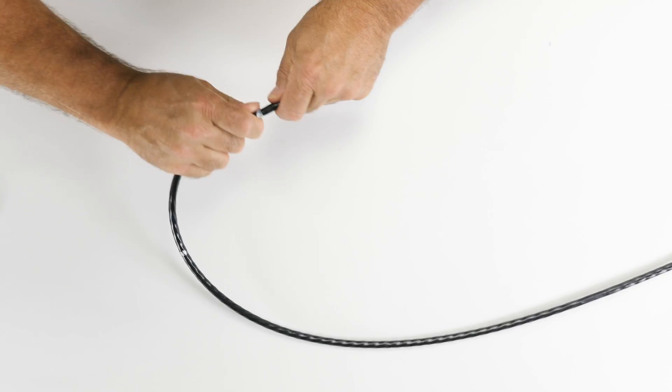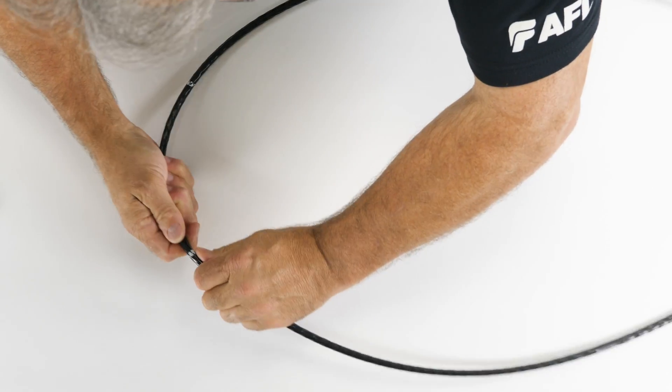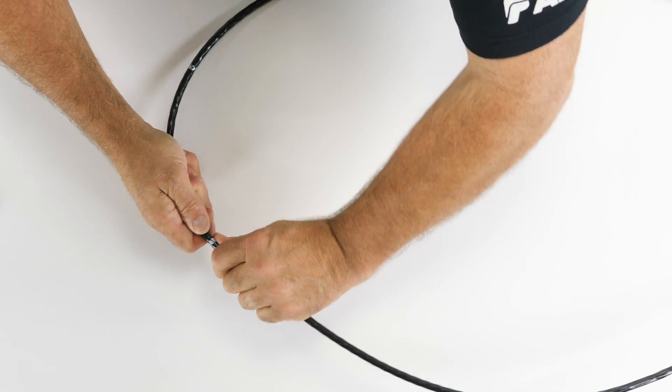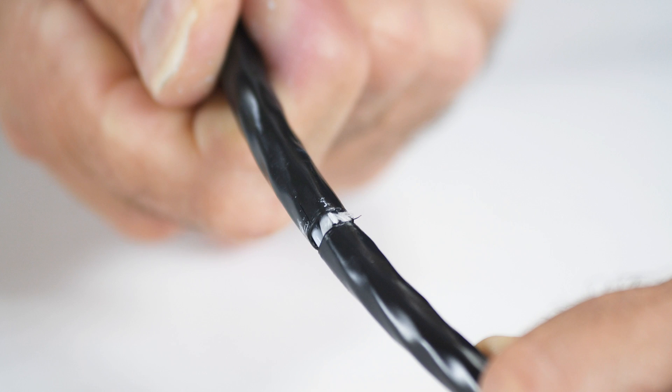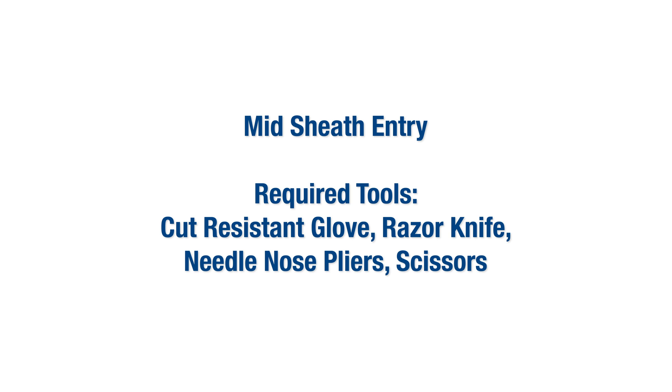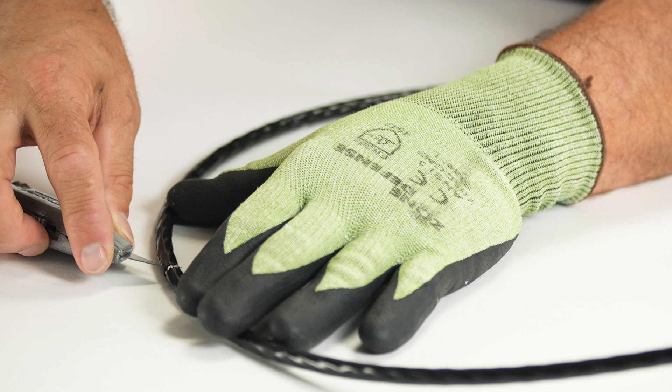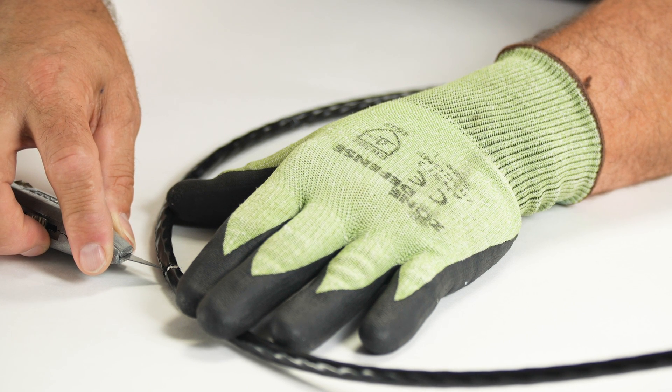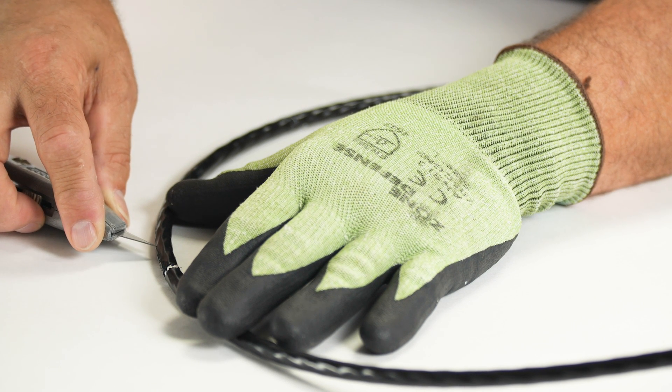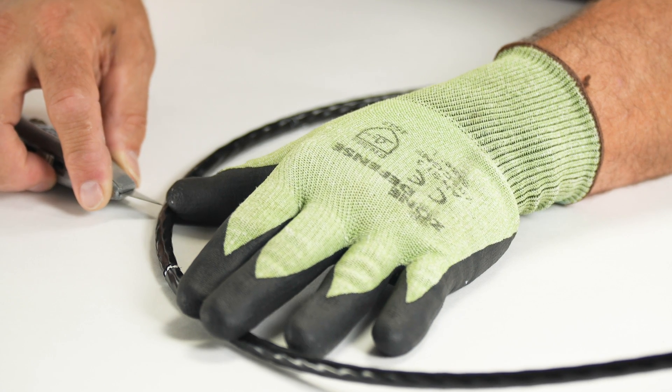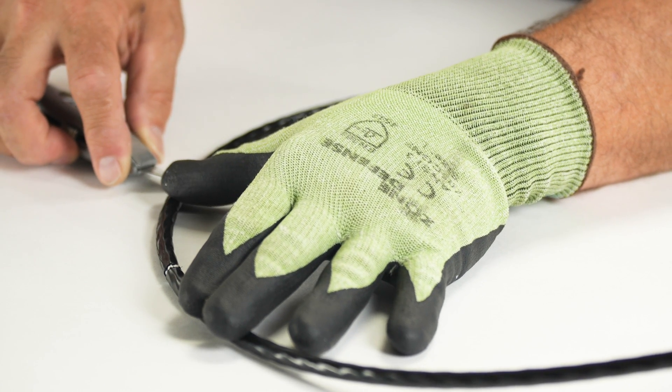Slightly bend the outer jacket at each of the ring-cut locations. This process will separate the jacket and allow the ripcord locations to be visually identified. Place the razor knife on the 8-inch portion of the jacket surface. Be sure that the ripcords under the jacket are located 90 degrees away from the scoring location. Carefully score the 8-inch surface of the jacket without penetrating completely through the material.